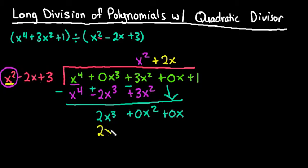So I would have 2x cubed as my first value. 2x times negative 2x gives me negative 4x squared, and then 2x times the positive 3 would give me 6x.